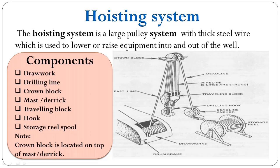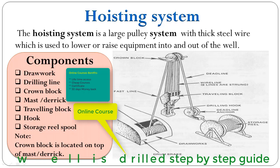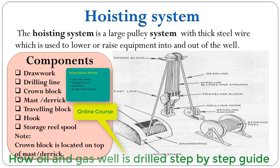The drilling line is secured to the drawworks drum with the help of a clamp, and after that the drilling line is spooled in on the drawworks drum as required. After that, we secure the drilling line on the deadline anchor firmly with the help of a clamp by tightening the nuts and bolts.